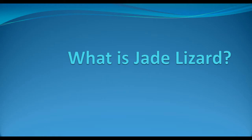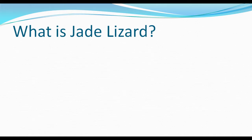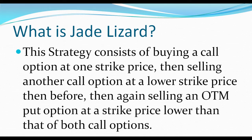A Jade Lizard is a specific options strategy formed by putting in a bear vertical spread using call options along with a put option which is sold at a strike price lower than the strike prices of the call options. This strategy consists of buying a call option at one strike price, then selling another call option at a lower strike price, and then selling an out-of-the-money put option at a strike price lower than that of both call options.